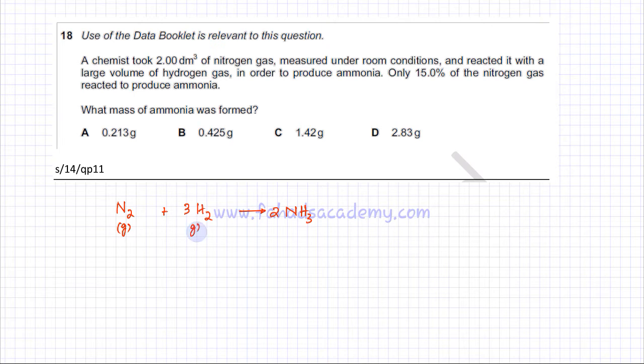They are all in gaseous form and the information given in the question is that 2 dm³ of nitrogen gas has been used in the reaction. But later he states only 15% of the nitrogen gas reacted to produce ammonia.